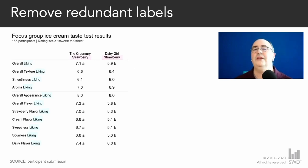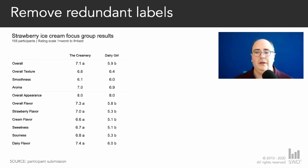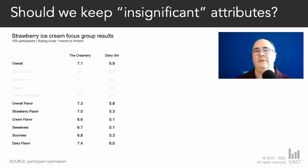Also, as Elizabeth pointed out, there are a lot of repeated words. 'Liking' appears 11 times and 'strawberry' appears twice — that's 10 and one time too many respectively. So get rid of those and move 'strawberry' into the title: 'Strawberry Ice Cream Focus Group Results.' Next, figure out what those A's and B's next to the numbers mean — they reference scores where differences were statistically significant. By de-emphasizing the other scores with faded gray, it becomes clear that significant differences were in all of the flavor categories and the overall category, while texture and appearance categories were not as important.